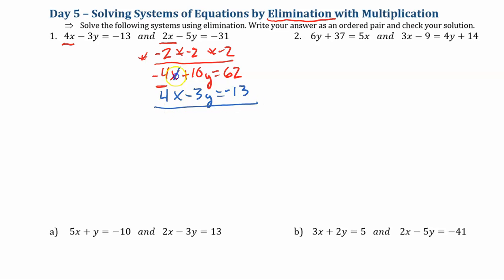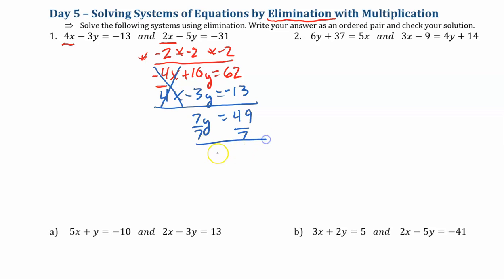Negative 4x plus positive 4x — they eliminate the variable x. 10y minus 3y is 7y, and that's going to equal 62 minus 13, which is 49. To solve for y, I'll divide both sides by y's coefficient. So y equals 7.